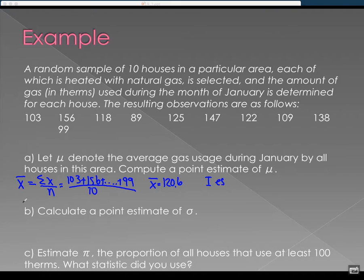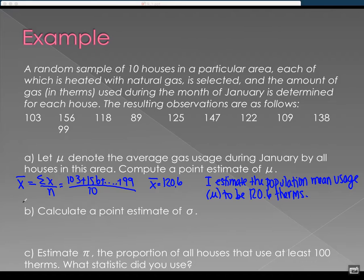This is how I want the work shown, and then I want you to write me a sentence. So I estimate the population mean usage, which is mu, to be 120.6 therms.